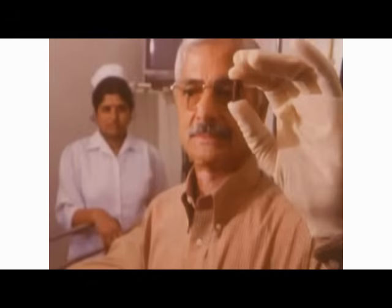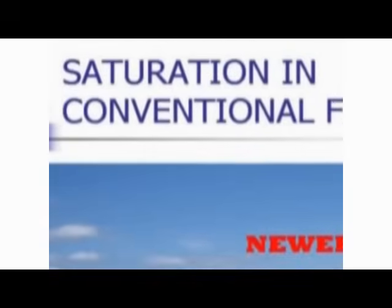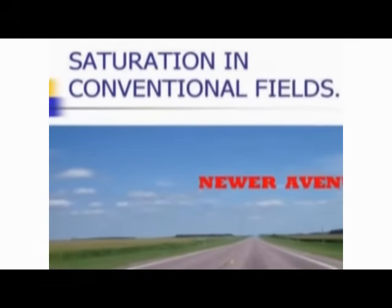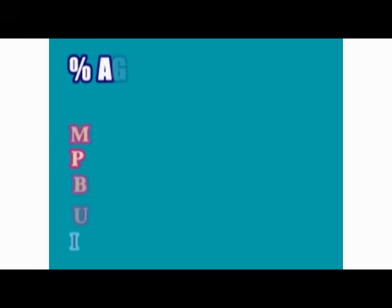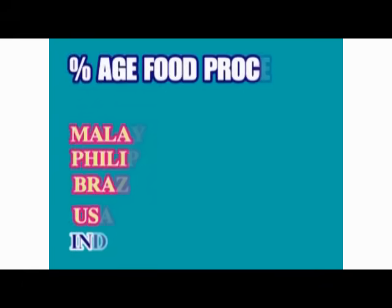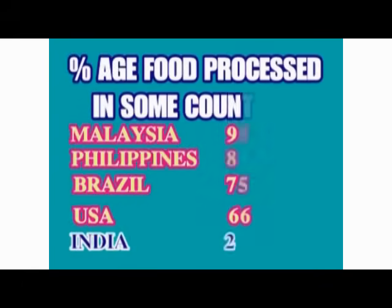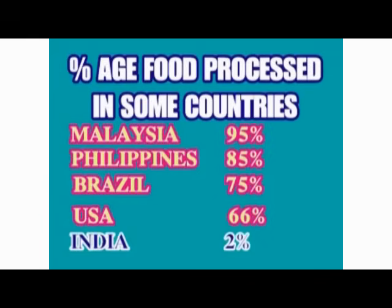People used to blindly run after careers in medicine and engineering, but now they think twice as they see saturation in these fields. This has led to opening of newer avenues like food technology, information technology and biotechnology. There is huge scope for food technologists abroad. Our precious agricultural produce hardly gets processed — only two percent, to be precise. On the contrary, other countries process most foods, creating a desperate need for trained manpower.